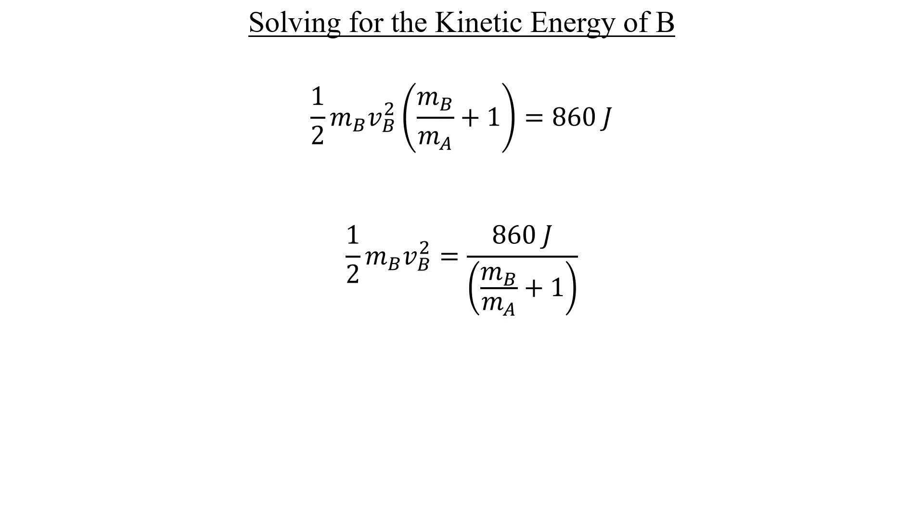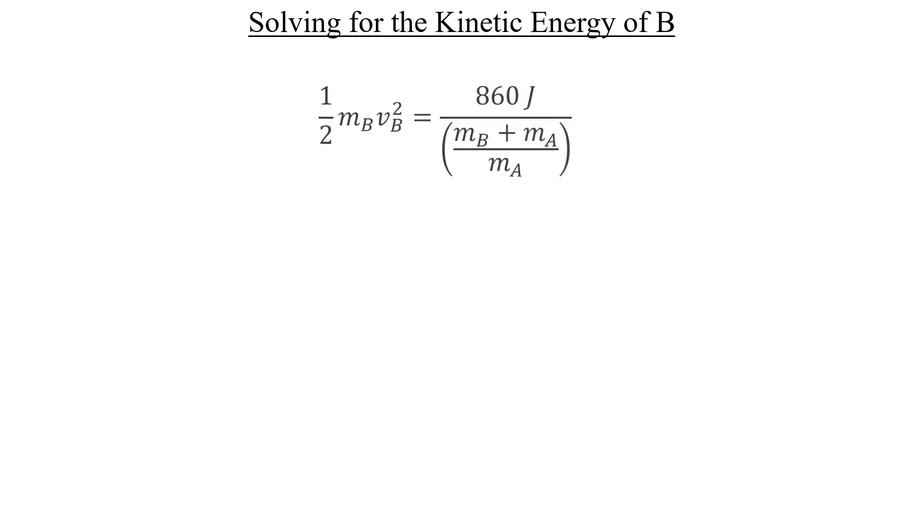I'm going to multiply one by a special form of one and then combine the fractions into a single ratio. Remember that dividing a fraction is the same as multiplying by the reciprocal of that fraction, so we can now flip it right side up. And now there's a pretty equation for the kinetic energy of B.